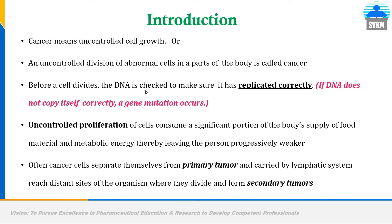Before a cell divides, the DNA is checked to make sure that it has been replicated correctly. If DNA has not replicated correctly, or if DNA doesn't copy itself correctly, a gene mutation occurs, and that gene mutation may serve as a cause for cancer. Uncontrolled cell proliferation consumes a significant portion of the body's supply of food material as well as metabolic energy, and because of this, a person becomes progressively weaker — this is one of the symptoms of cancer.